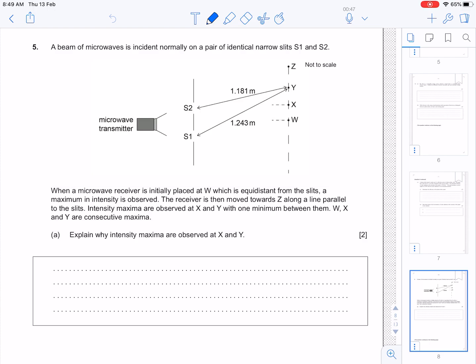When a microwave receiver is initially placed at W, which is equidistant from the slits, a maximum in intensity is observed. The receiver is then moved towards Z along a line parallel to the slits. Intensity maxima are observed at X and Y, and one minimum between them. W, X, and Y are consecutive maxima.